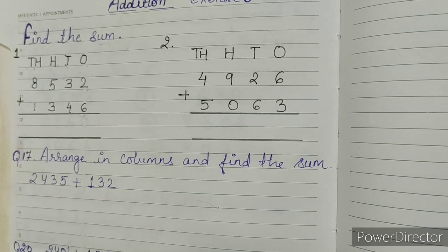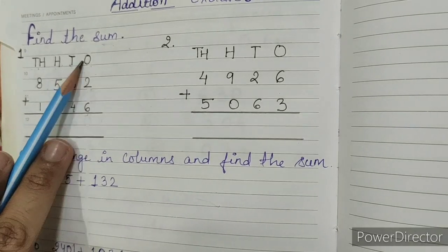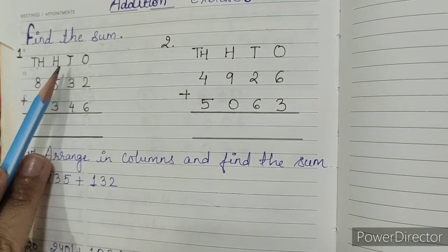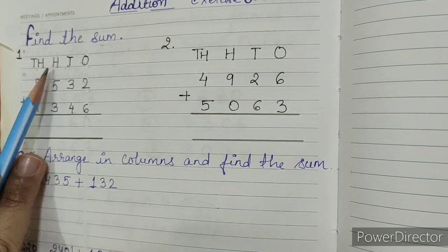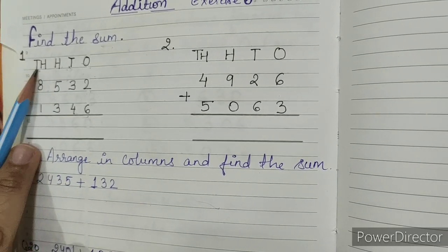Now in the next number, 6 is in ones place, 4 is in tens place, 3 is in hundreds place, and 1 is in thousands place.